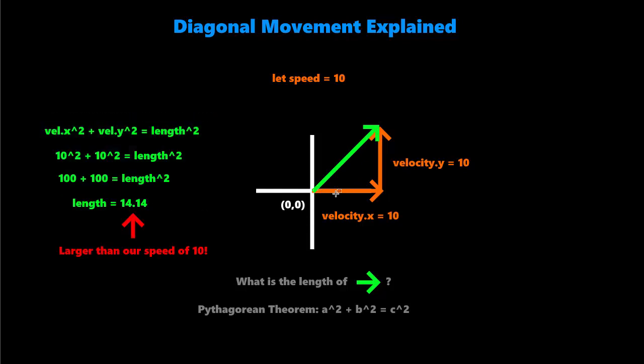we eventually calculate based on this being a length of 10 and this being a length of 10, that we're really moving at a speed of 14.14. That's way faster than the speed of 10 that we were expecting. And that's what was bothering me. I don't like having a faster speed when my player is moving diagonally.